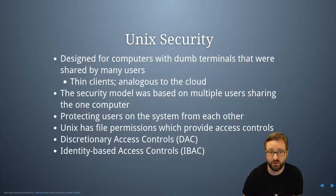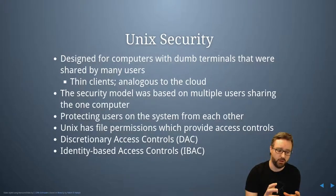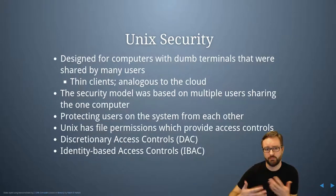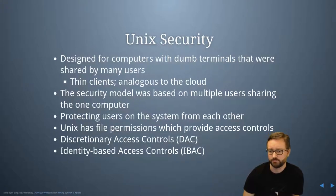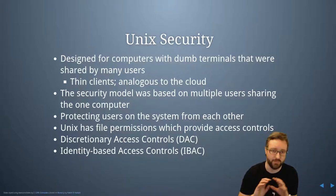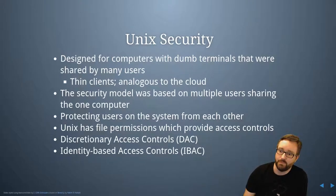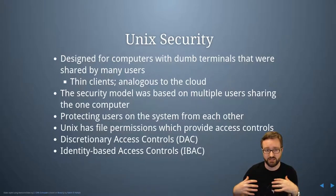UNIX has been around for a while, really starting to get used a lot in the 70s. The way computer systems worked at the time is mostly you'd have a mainframe server in place and then multiple dumb terminals — just a keyboard and mouse — that different users could sit down at and log into the system. So you had multiple users using the same server at the same time. We've kind of come full circle now with cloud computing, but the original UNIX security model is about having lots of users on the same computer, protecting the system from the users and the users from each other.